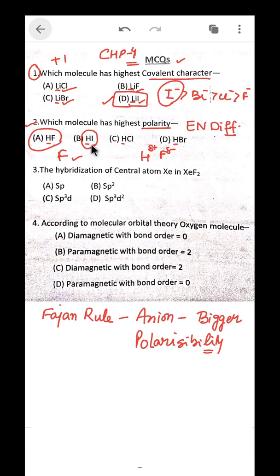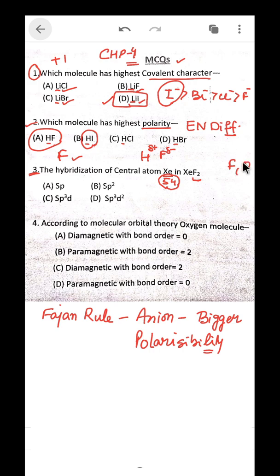Next question: what is the hybridization of the central atom xenon in XeF2? Xenon's atomic number is 54; it is a noble gas. Noble gases can form compounds with highly electronegative elements like fluorine and oxygen. Xenon, being a noble gas, has 8 valence electrons — all filled.